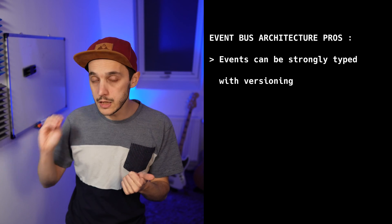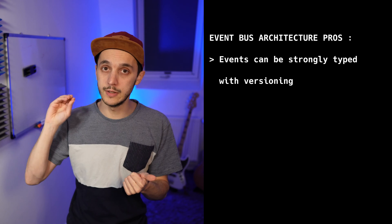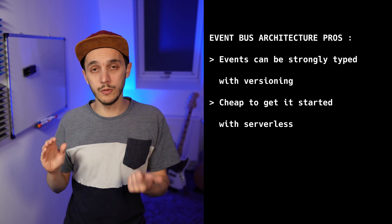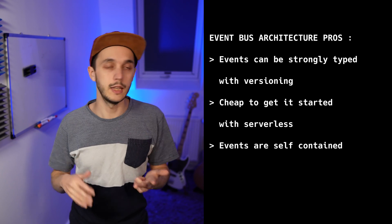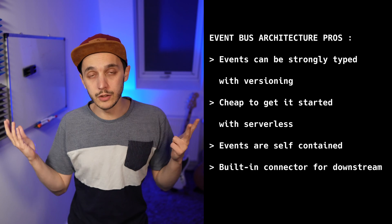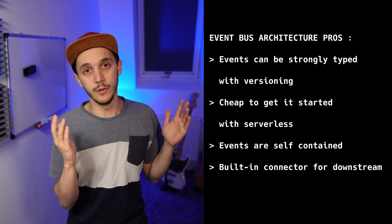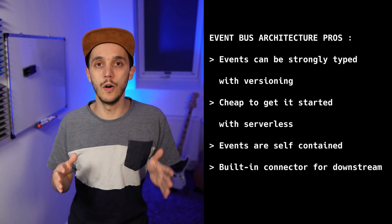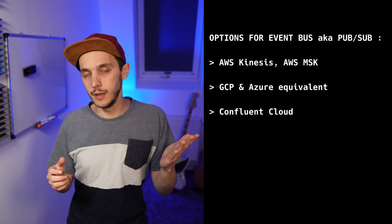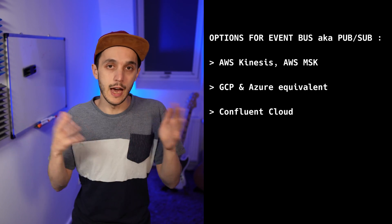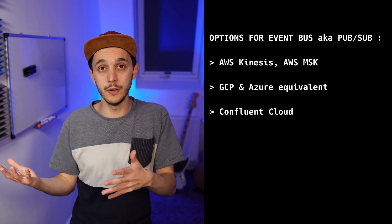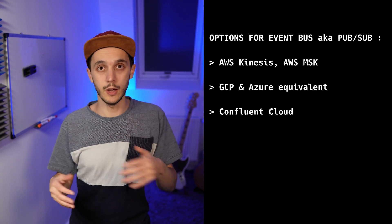First, events can be strongly typed and each event can be associated with a schema version. Second, it's pretty cheap if you use serverless components and the event is self-contained per topic. Finally, event platforms like PubSub offer built-in connectors to downstream the data to the classic tools of the data team, whether it be a data lake or a data warehouse. Technologies like AWS Kinesis, Kafka, managed Kafka on AWS MSK, and equivalents from Google and Azure are all good options — as is Confluent offering managed Kafka on different cloud providers.